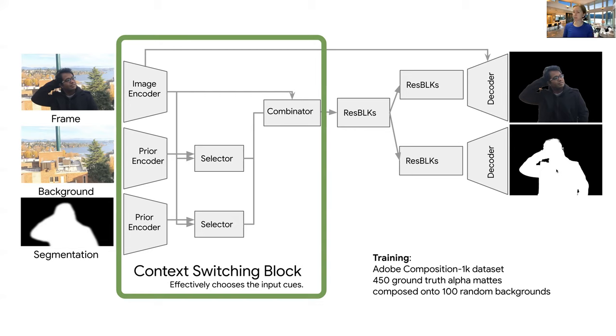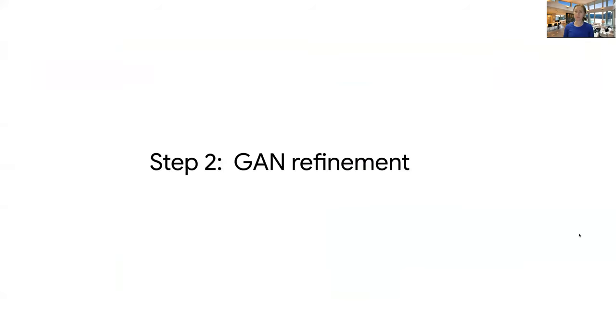Given that, all that goes to ResNet blocks, and then decode it into a pair of images, which are foreground and alpha approximate alpha mat. This alpha mat is not great yet because we don't have a lot of data, pairwise data. And also there is no way of understanding if it looks realistic and good enough, just by usual losses. And so our second step, which we found very effective, is to use GANs for refinement.